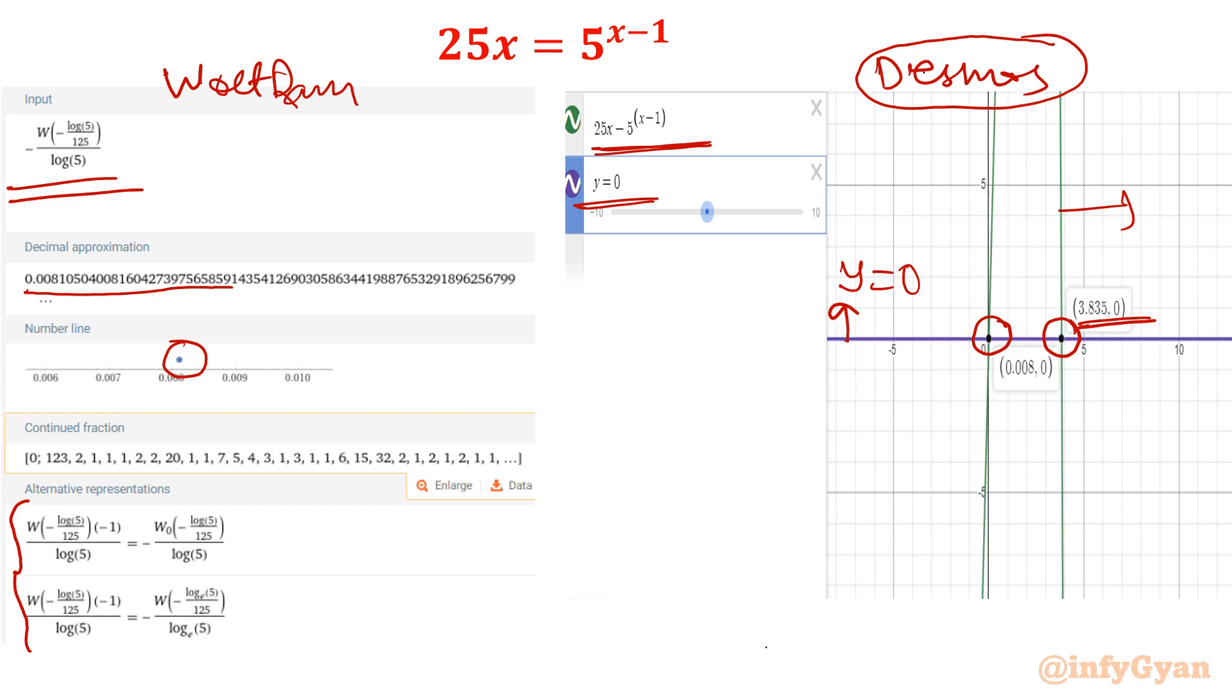So using Desmos we can find out one more solution, a real solution directly. But using Lambert function we are getting 0.00. Wolfram also verifies the same result. I hope you like this video. Thank you so much for watching. Don't forget to subscribe, like and share. Bye bye. We will meet in the next video.